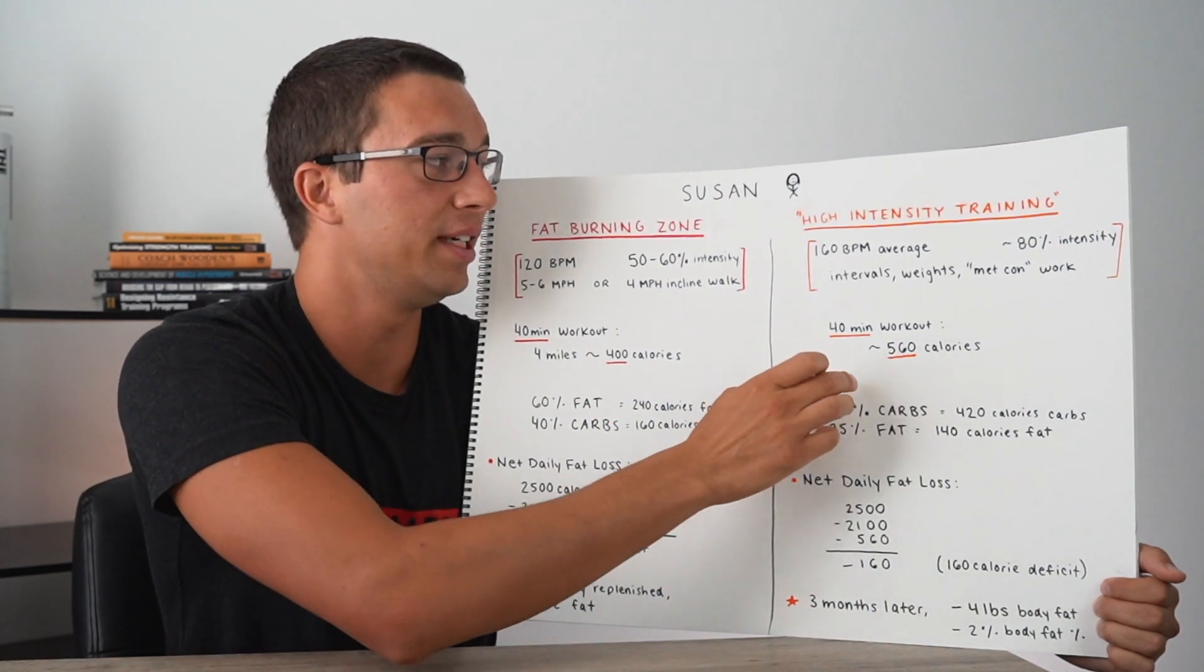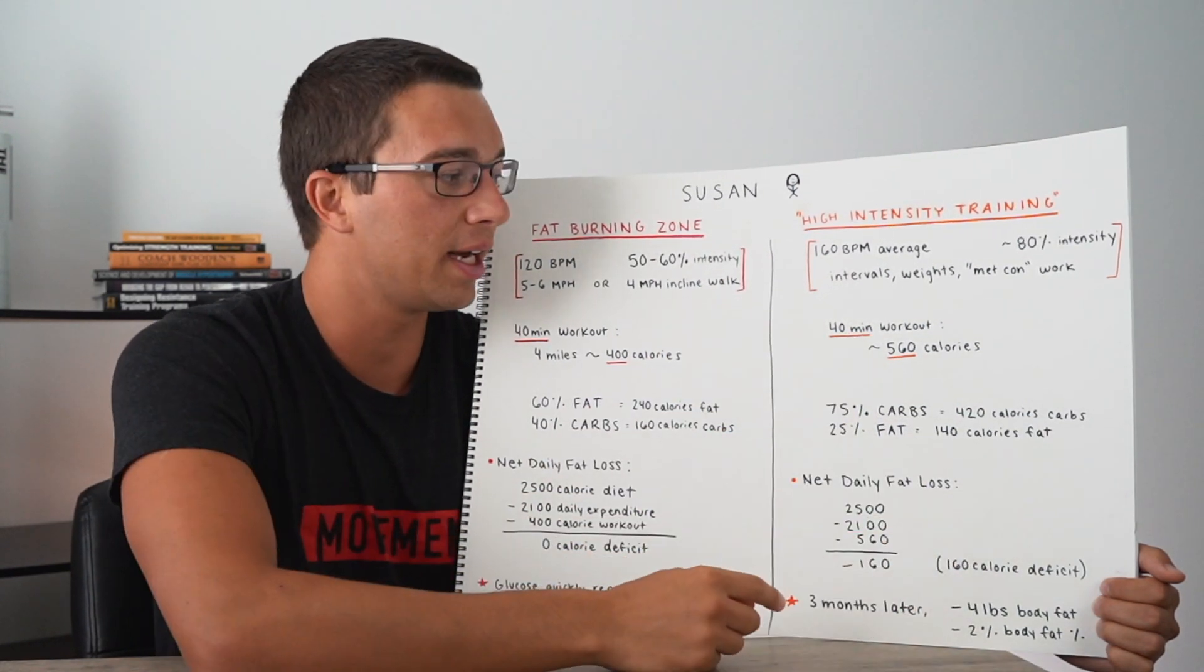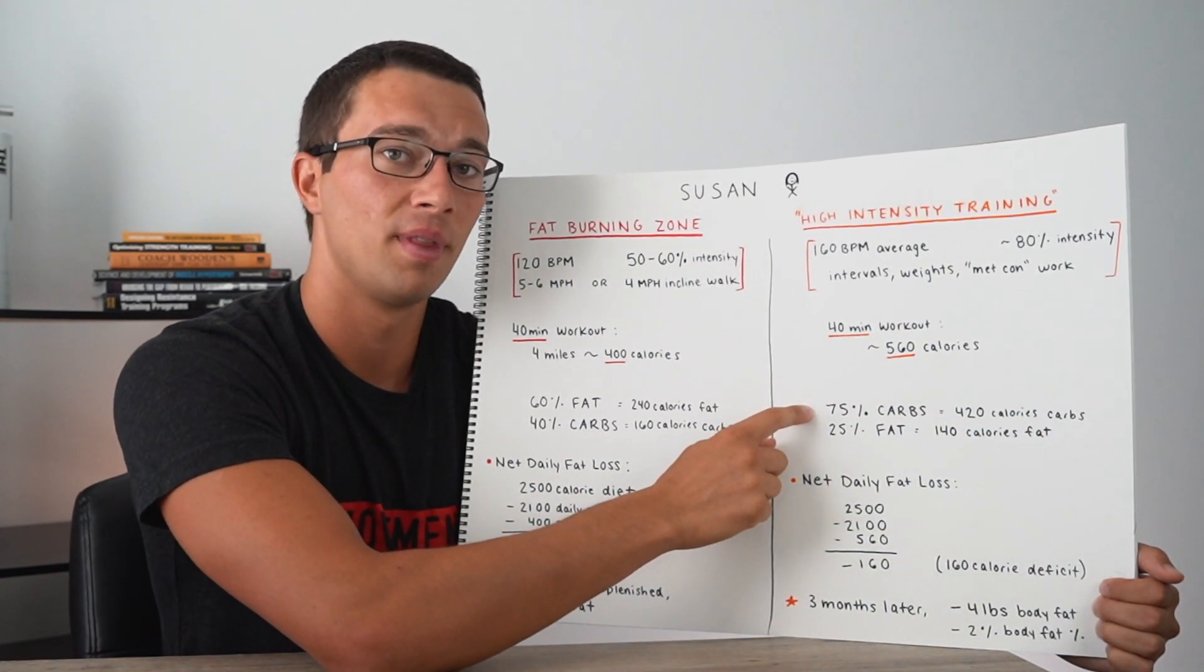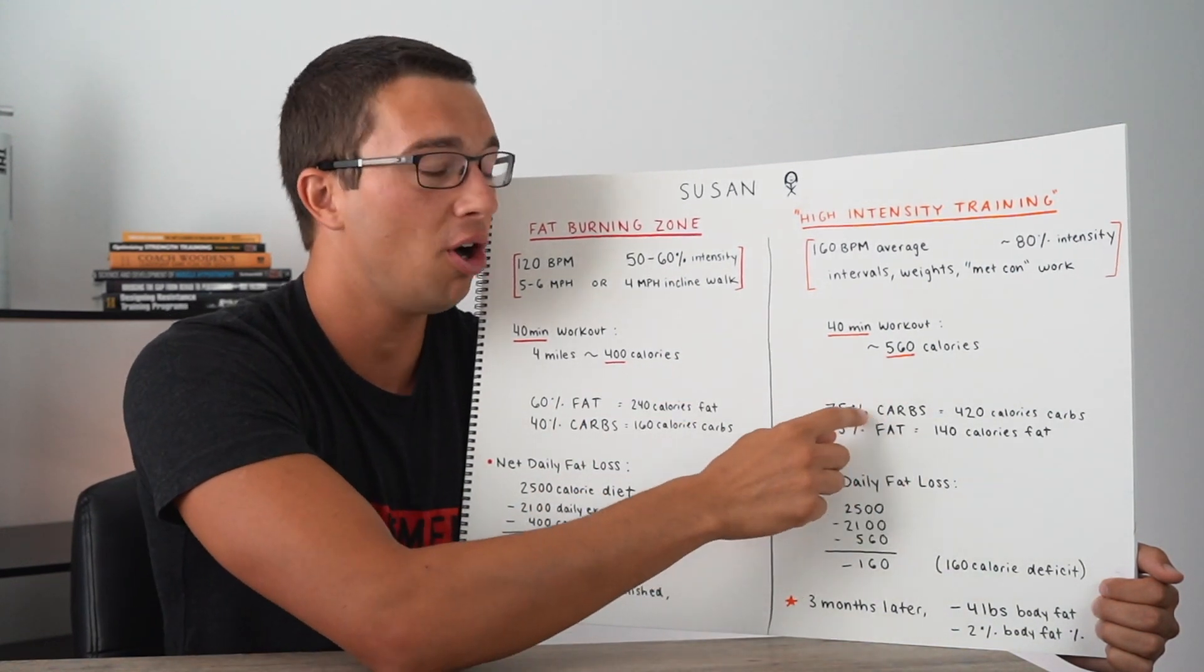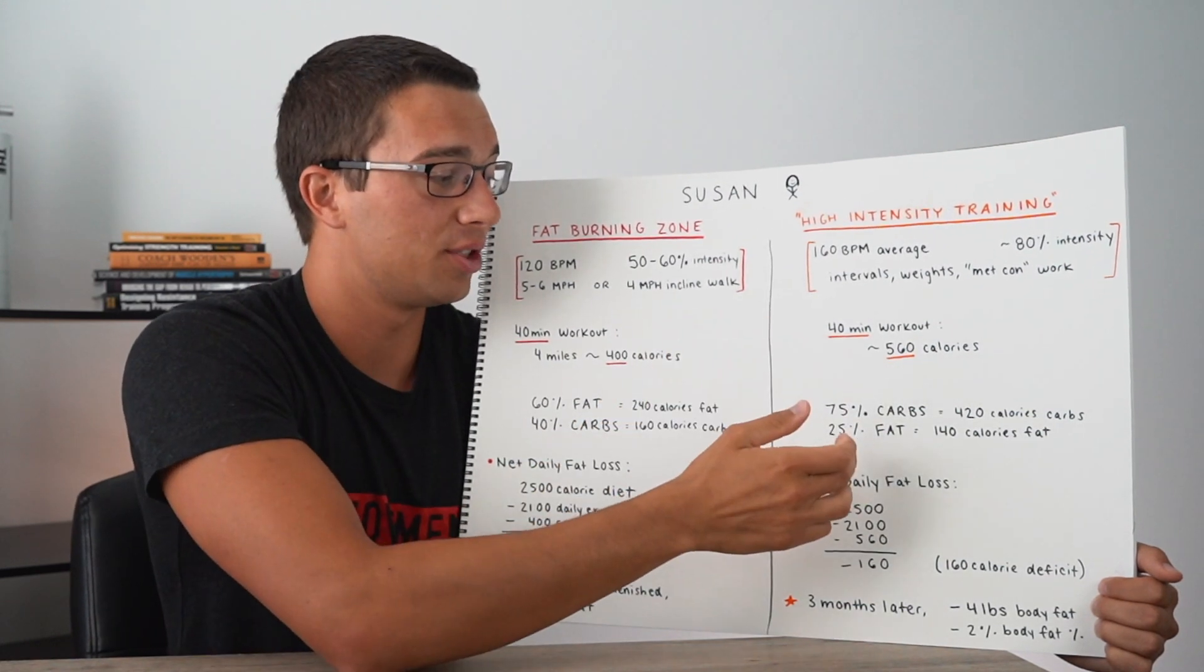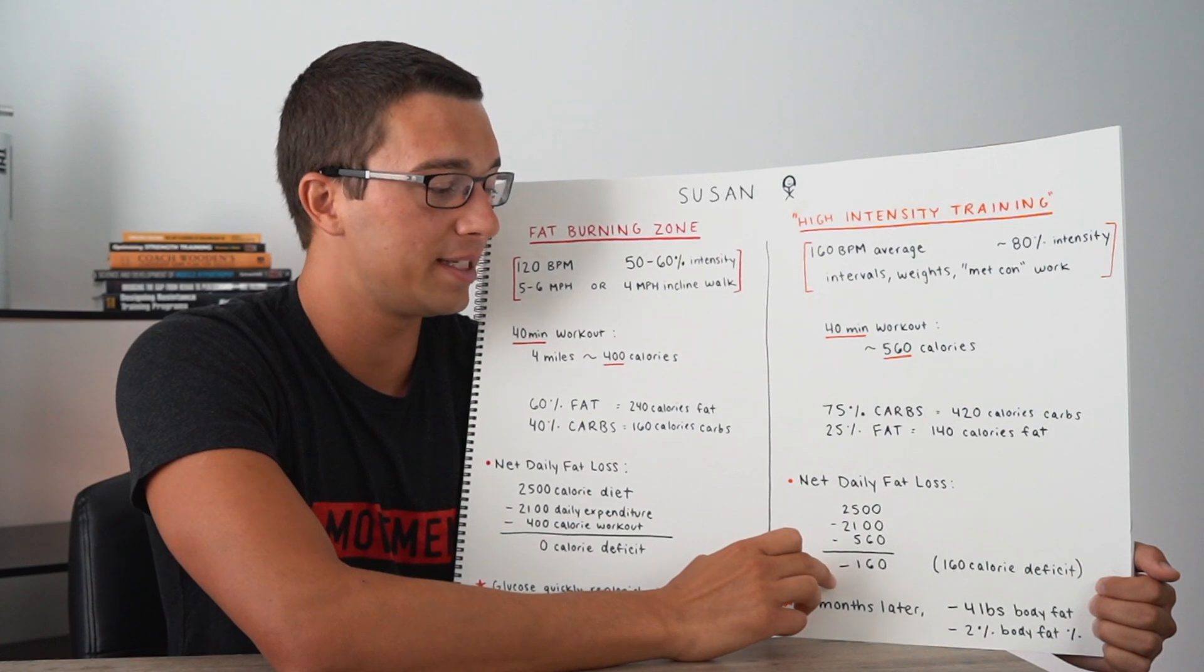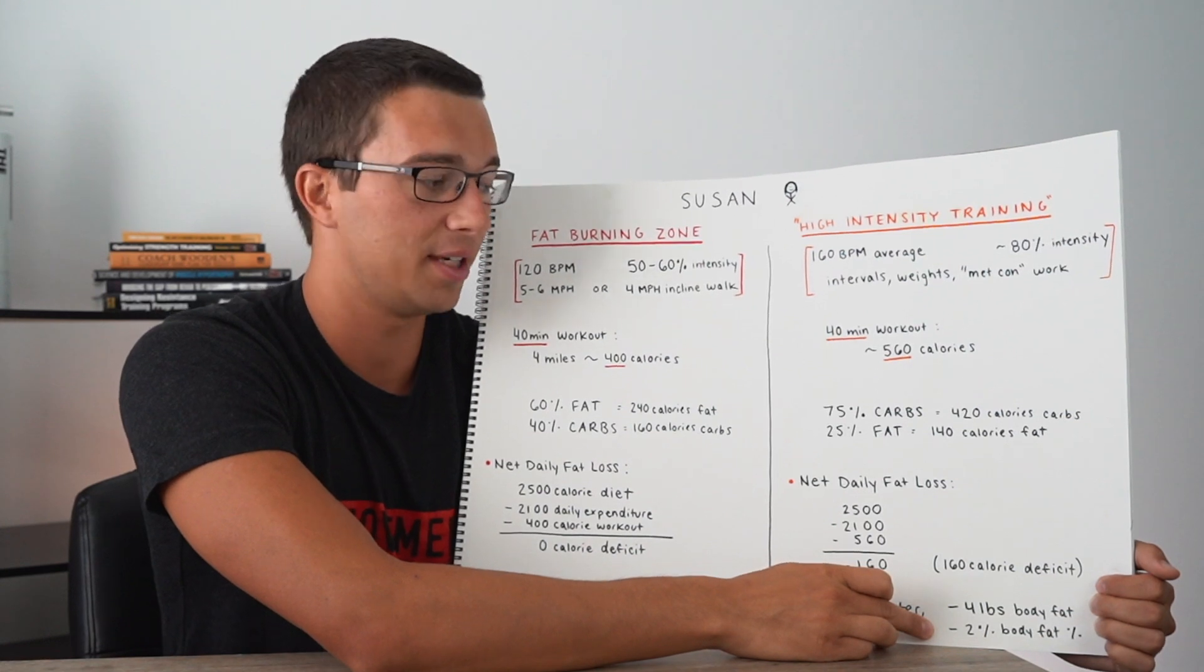The difference for Susan over here doing the high intensity training is that over the 24 hours after her workout, she's going to have to replenish all these carbohydrates that she lost during her workout. So the next meal and the meal after that is going to actually go to replenishing carbs and not building back up fat stores. So what really matters is that she actually got to a total calorie deficit. And then over the course of weeks and months, that can actually lead to substantial body fat loss and body fat percentage loss.